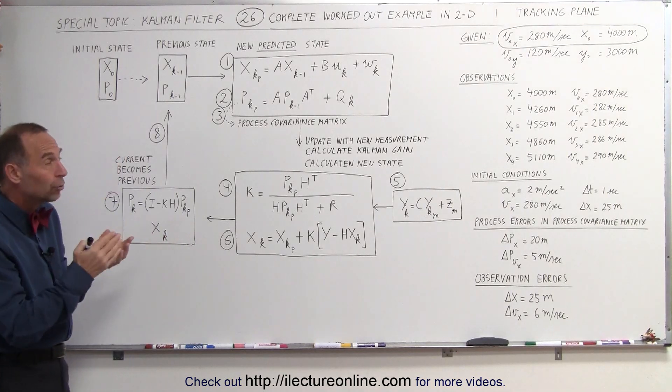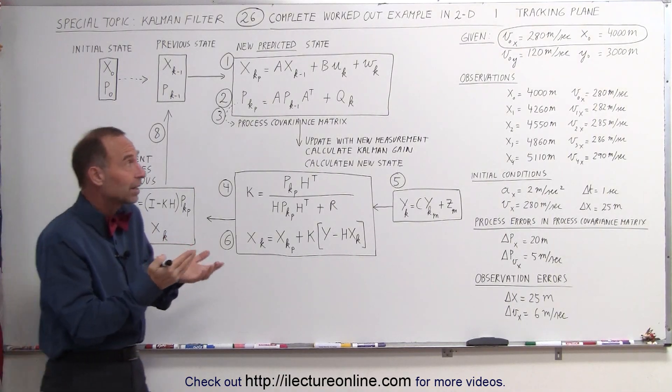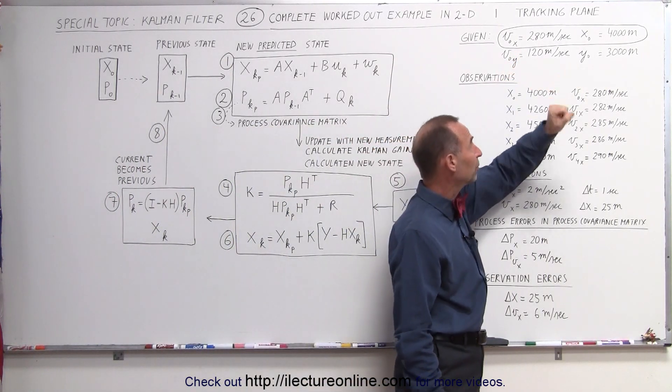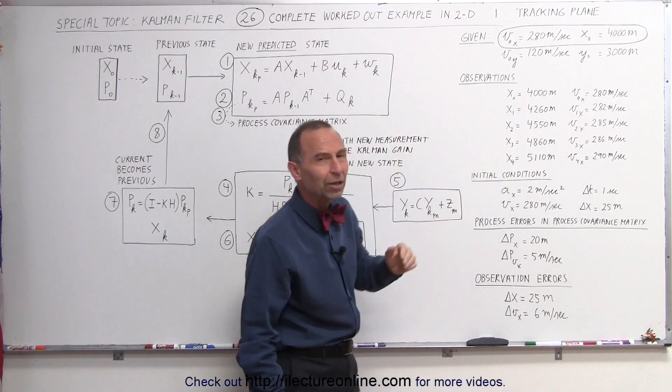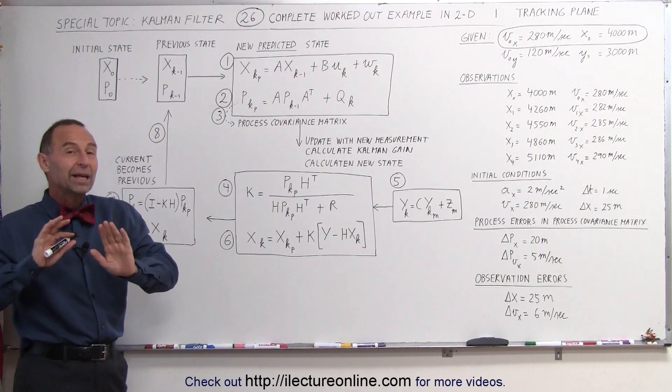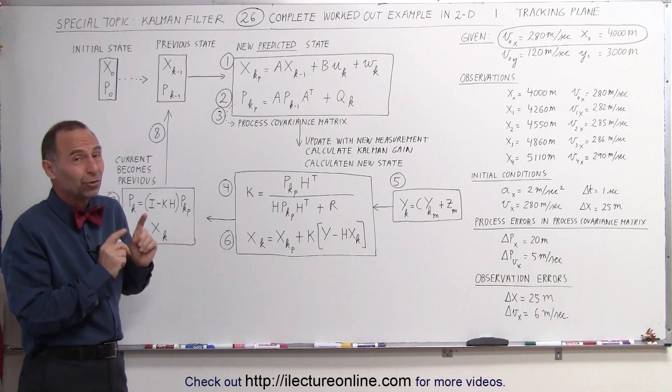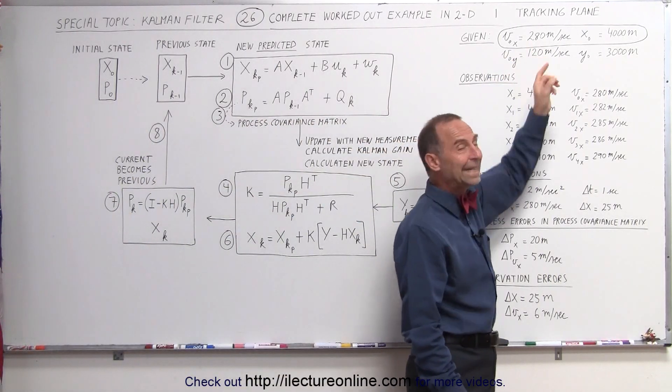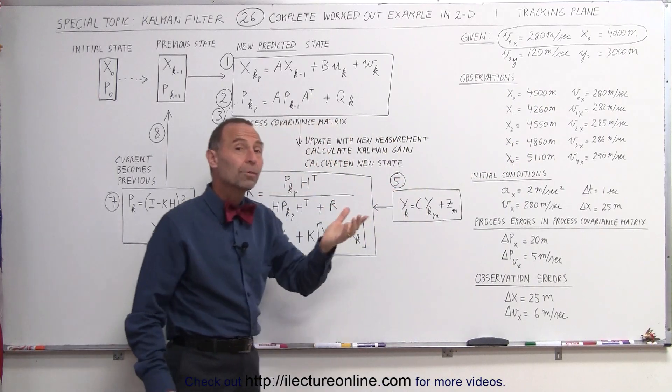What we're going to do here is apply it to a simple example where we're tracking an airplane. The airplane has some initial velocity and some initial position, both in the x and the y direction. But since we're going to make this, and of course also in the z direction, but since we're going to make this a really simple example, we're just going to start out with only considering the position and motion in the x direction only, that makes it a two-dimensional case.